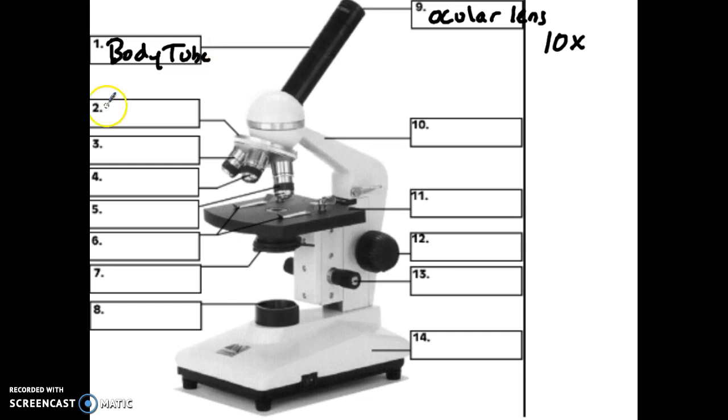Number two down here is what's known as the revolving nose piece. Not the rotating nose piece, not anything that you make up in your head, revolving nose piece. And what that does is it's going to adjust or change what are called the objective lenses. So those are numbers three, four, and five, which we haven't got to yet, but we might as well give them names and proper definitions at this point.